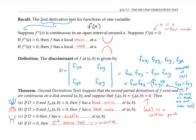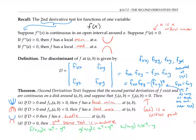To see that the second derivatives test is inconclusive when the discriminant is zero, I encourage you to try plotting on some graphing software: f(x, y) = x⁴ − y⁴, g(x, y) = x⁴ + y⁴, and h(x, y) = −x⁴ − y⁴. You can check that the discriminant at the point (0, 0) is zero for all three of these functions, yet one of them has a saddle, one has a local minimum, and one has a local maximum.